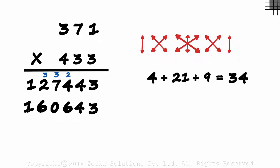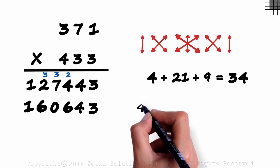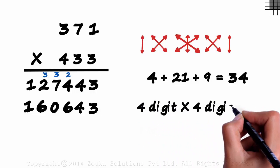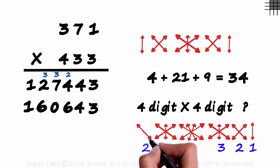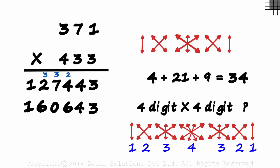Will this palindrome approach work for the product of two four digit numbers? Absolutely! It will be 1, 2, 3, 4, 3, 2 and a 1. Yes, this is a palindrome as well. We will look at a couple of examples of multiplying two four digit numbers in the next session.